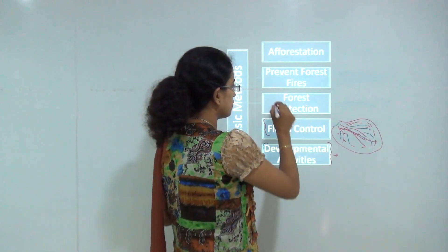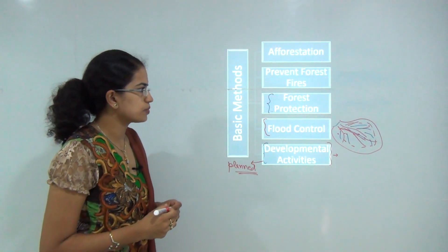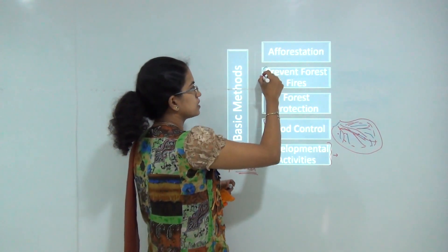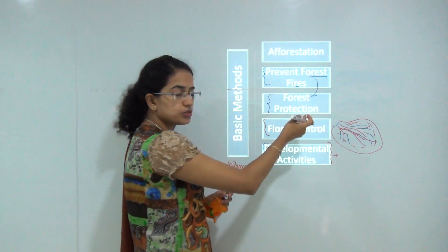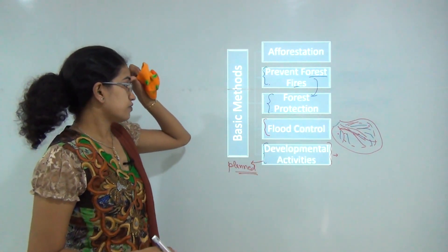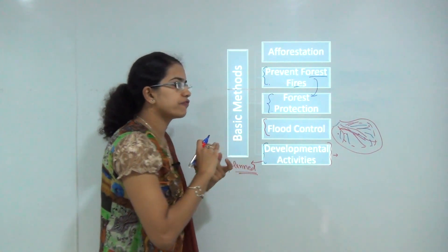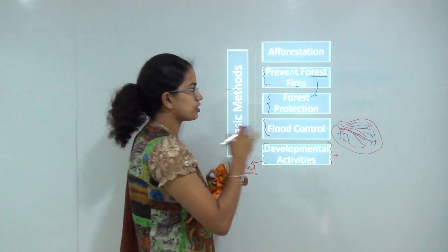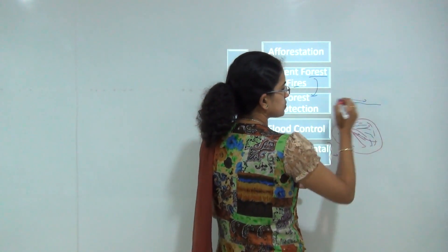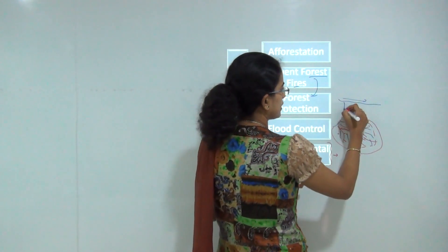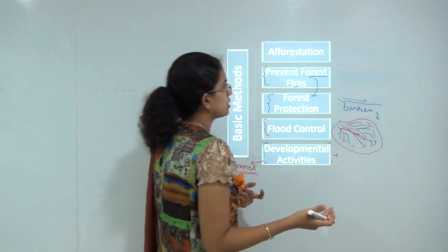The next fundamental method is protection of forests. There are many government policies that have been implemented to protect forests. Prevention of forest fires is also an important part of forest protection, because forest fires cause many trees to vanish, leaving large areas of land barren and prone to soil erosion.